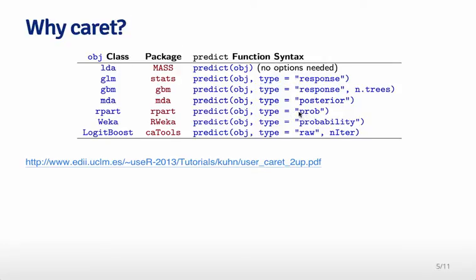Or for example, if we want to use rpart, we predict with type equals probability to predict the response. In each case they're a little bit different. The caret package provides a unifying framework that allows you to predict using just one function without having to specify all the options you might care about to get the same prediction out.